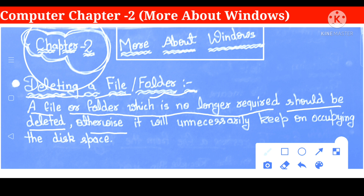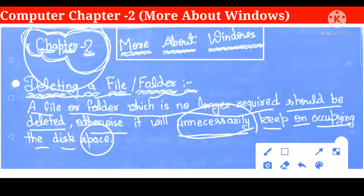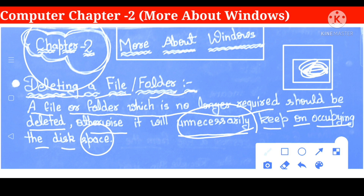Otherwise, it will unnecessarily — अनावश्यक रूप से — keep on occupying the disk space. मतलब कि जो हमारी memory है, उसमें place पूरा file folder से भरी पड़ी है, जिसे हमें longer time के बाद जरूरत नहीं। और हम नया कोई file folder बनाते हैं, तो उसे रखने का कोई place नहीं मिलता। इसलिए हम अपने file folder को delete करते हैं।